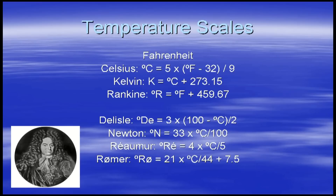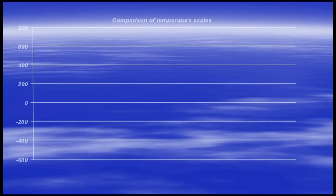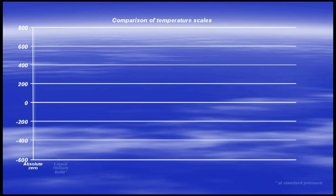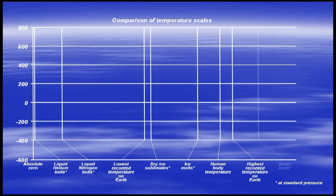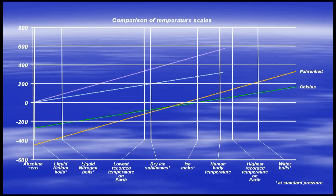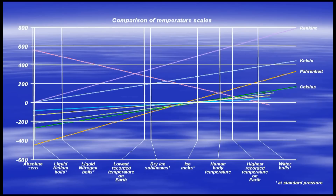The Rømer scale was named after a Dutch astronomer who proposed it in 1701. The zero was initially set using freezing brine, and the boiling point of water was defined as 60 degrees. The Réaumur scale defines the freezing and boiling points of water as 0 and 80 degrees respectively, and its only modern use is in measuring milk temperature and cheese production. Here is a comparison of the eight temperature scales graphically. As you can see, there are two absolute scales — Kelvin and Rankine. The Celsius and Kelvin scales are parallel, as are the Fahrenheit and Rankine. Only the DeLisle scale has a negative slope, as expected.